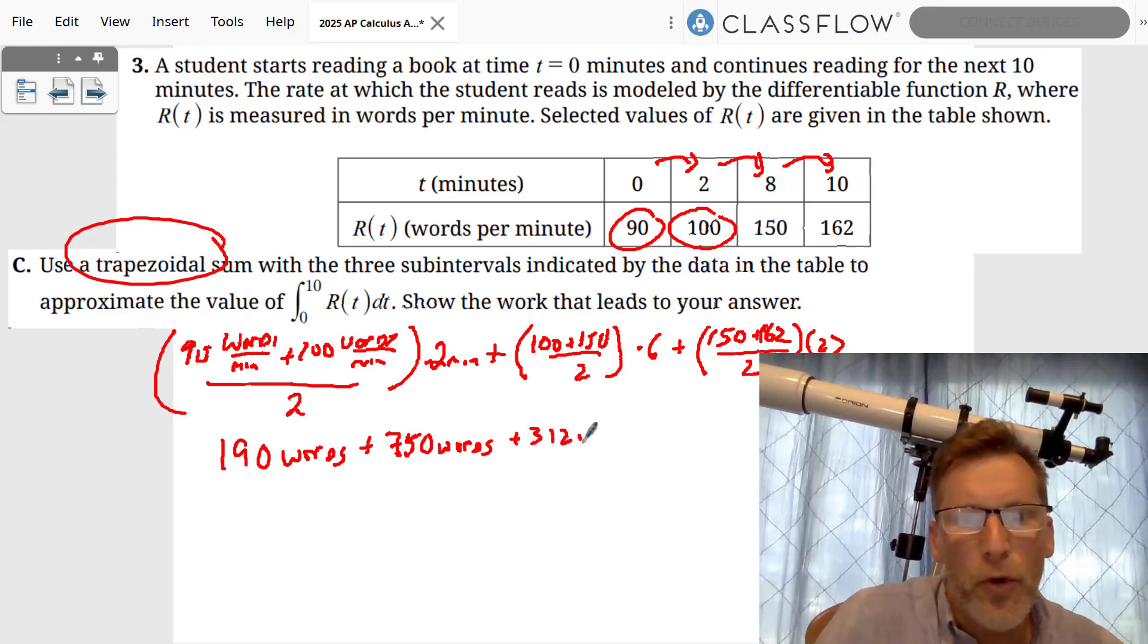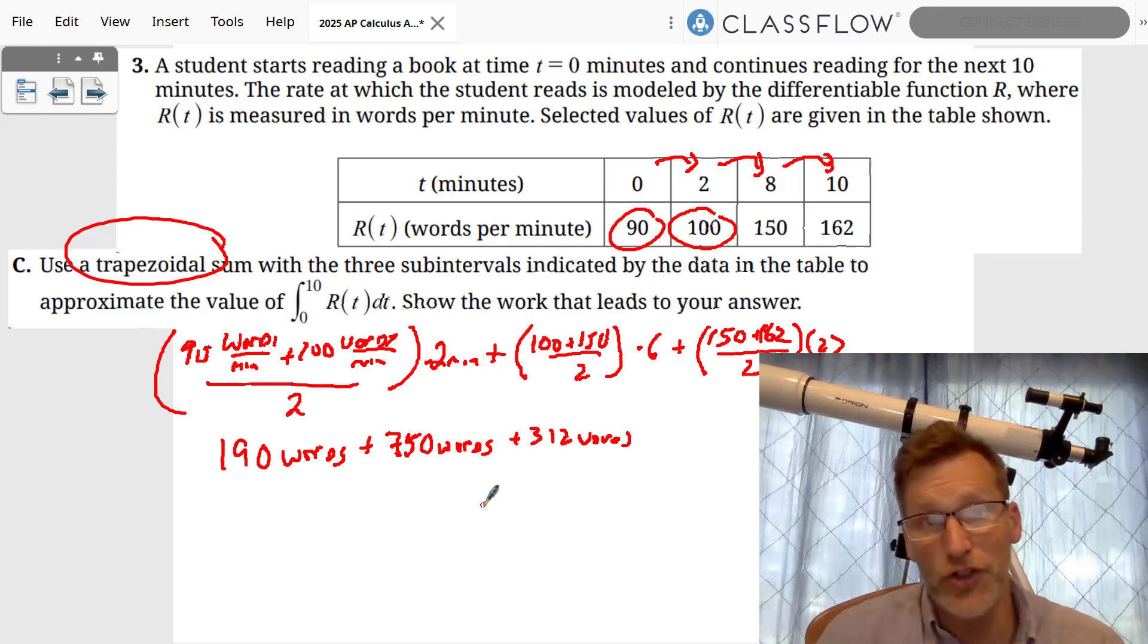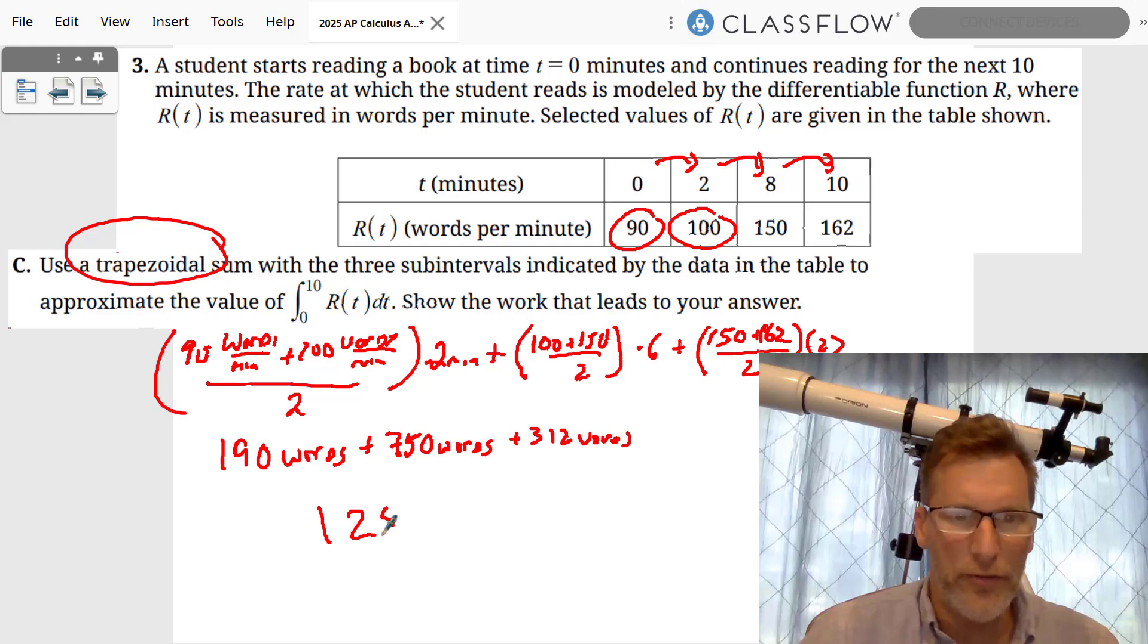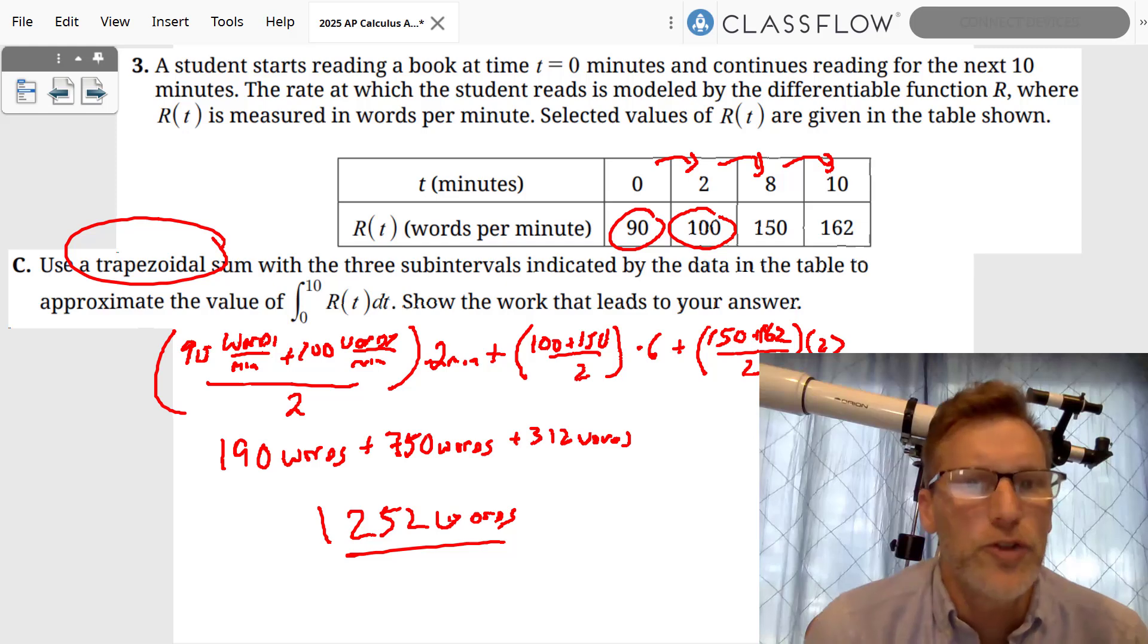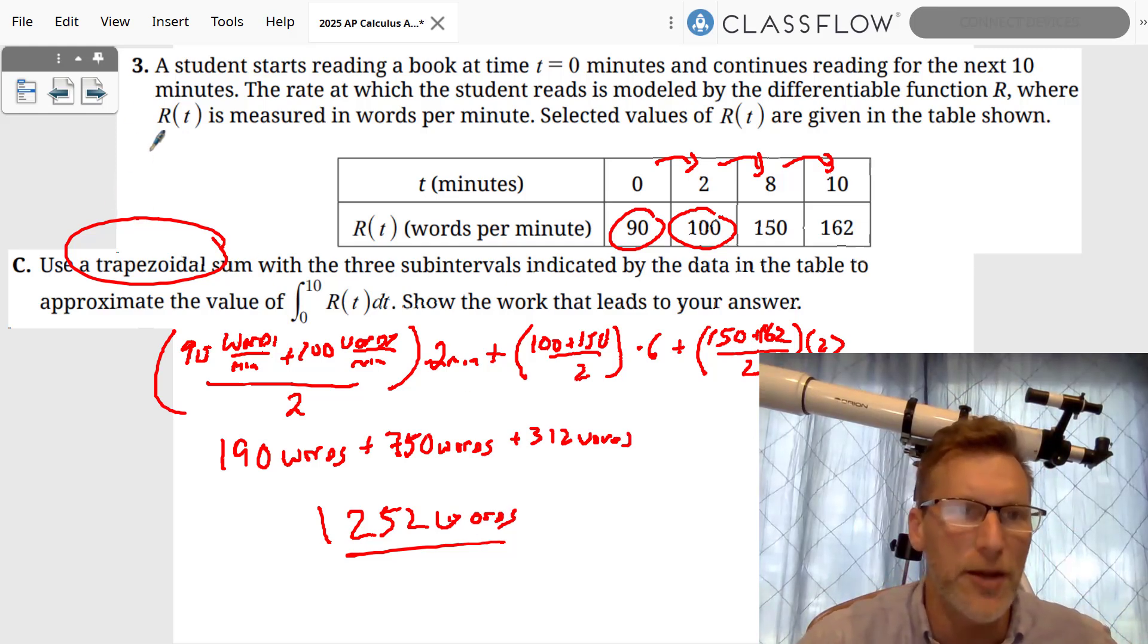And so how many words did the student actually read? You add all this up, and that's 1,252 words. And that is how much we read using a trapezoidal sum.